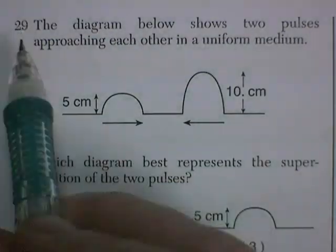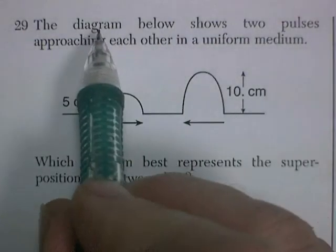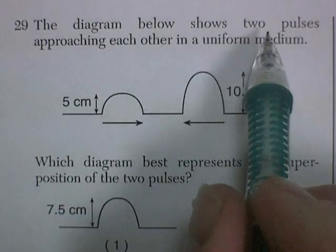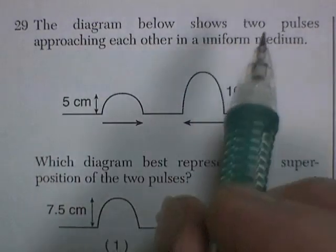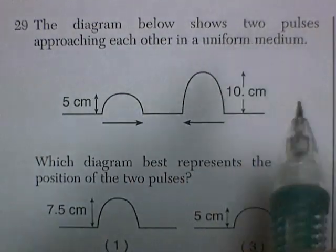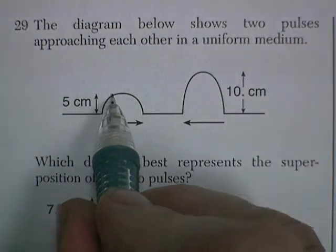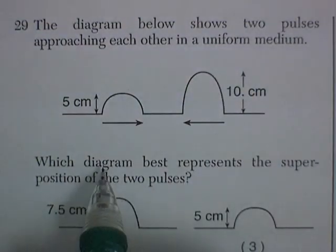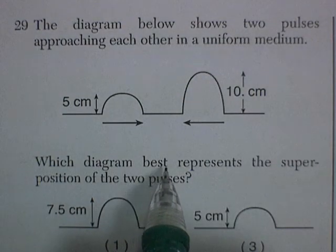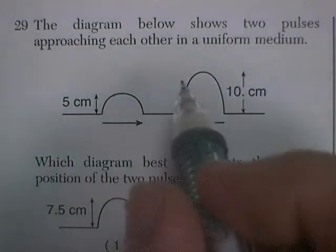Question 29. The diagram below shows two pulses approaching each other in a uniform medium — five centimeters and ten centimeters. Which diagram best represents the superposition?